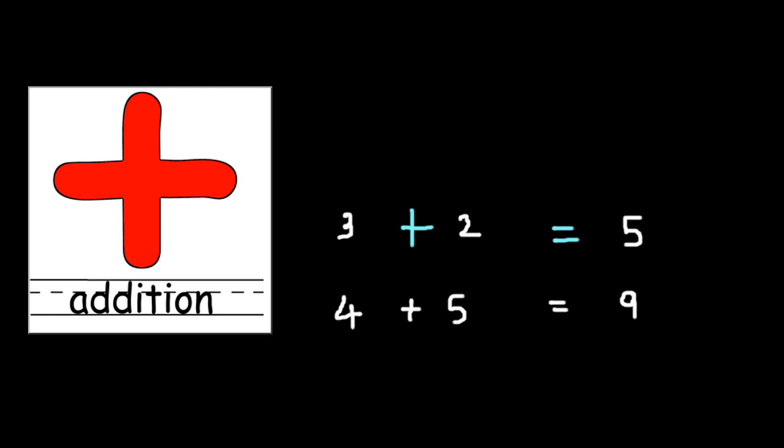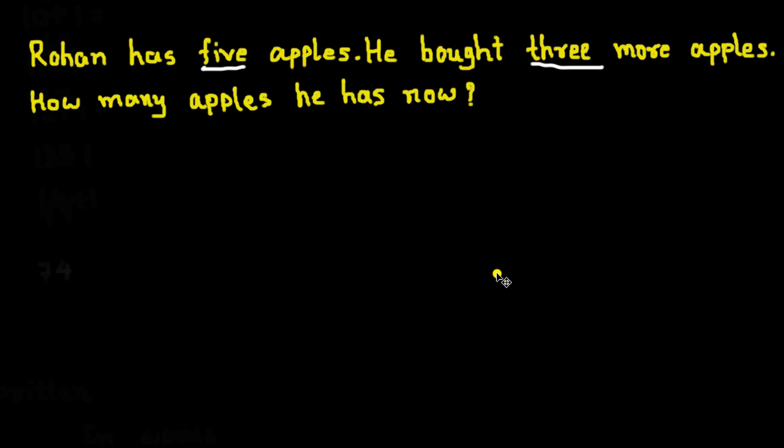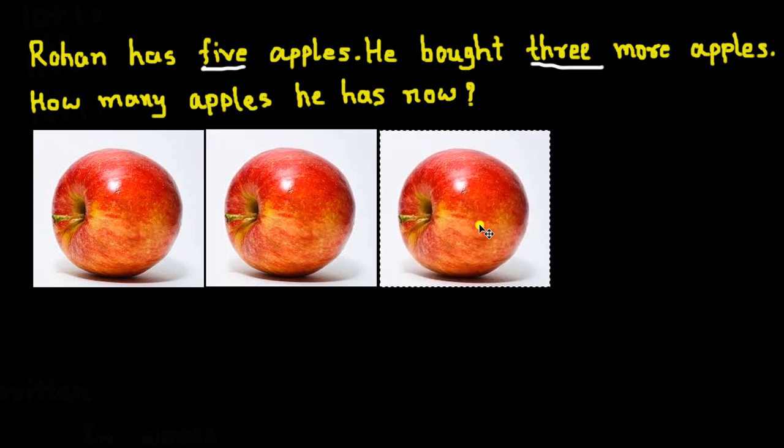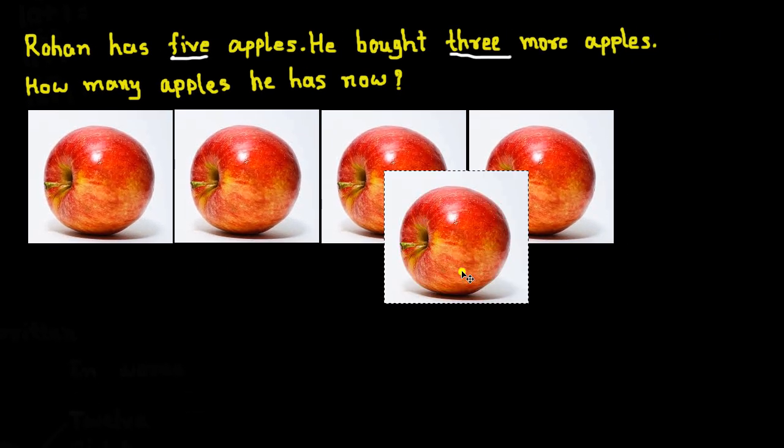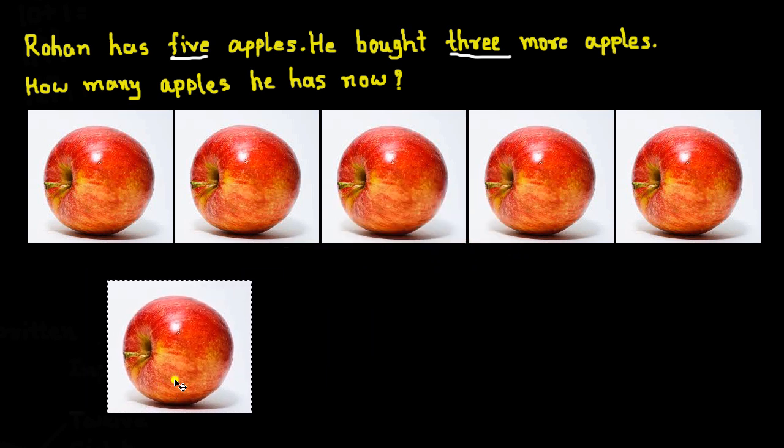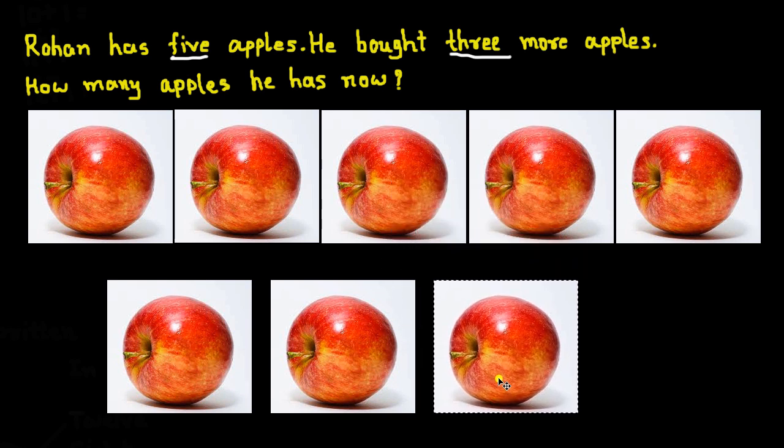Let's understand this with an example. Here's a question: Rohan has 5 apples. He bought 3 more apples. How many apples does he have now? So, Rohan has 5 apples: 1, 2, 3, 4, and 5. He bought 3 more apples, so let's add 3 more: 1, 2, and 3. Here we are adding 3 more apples.